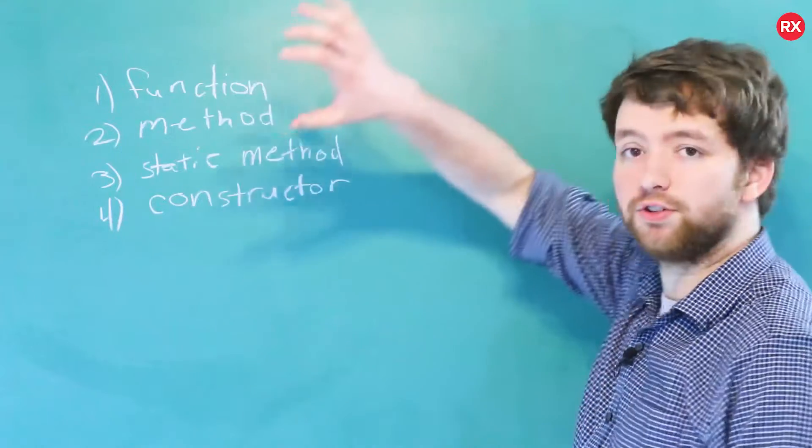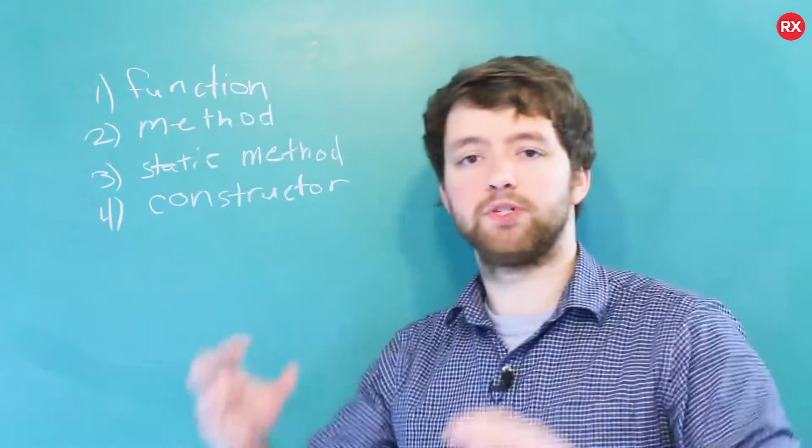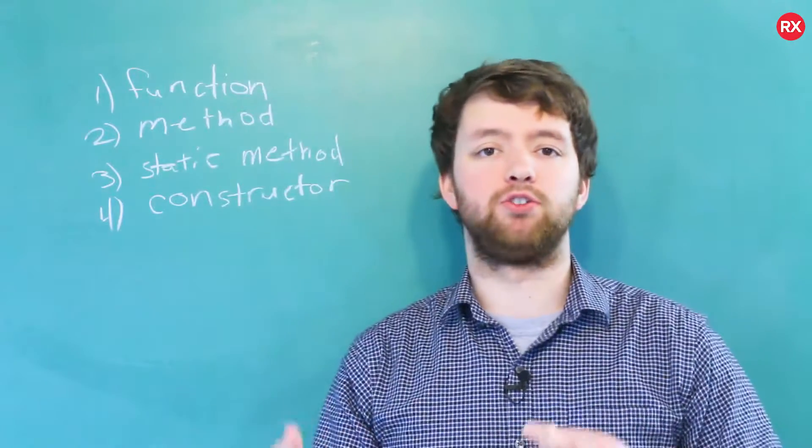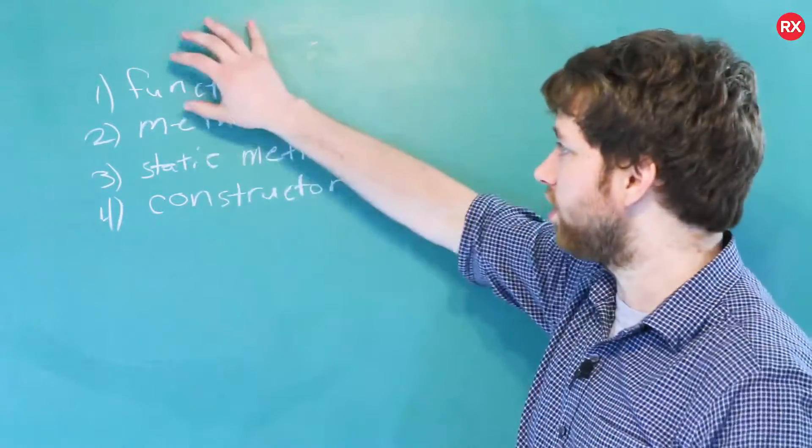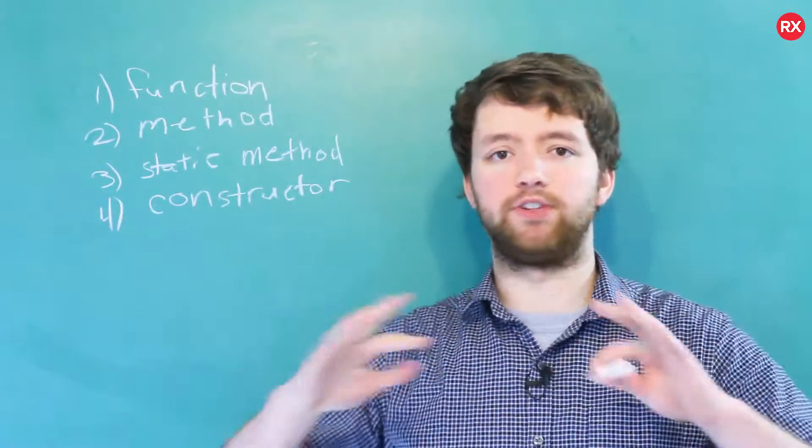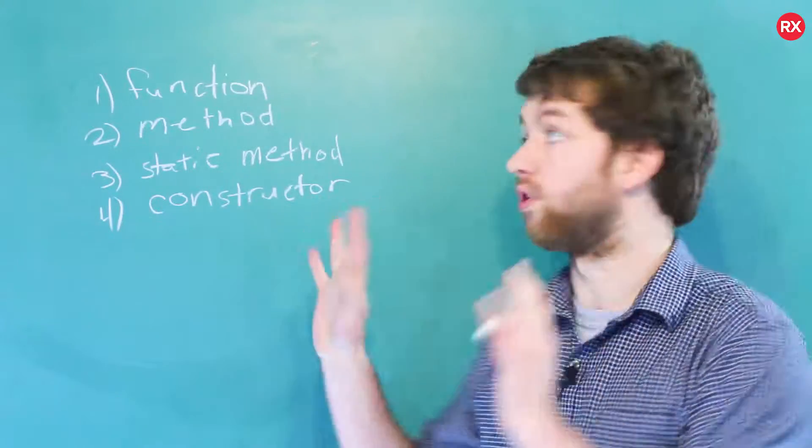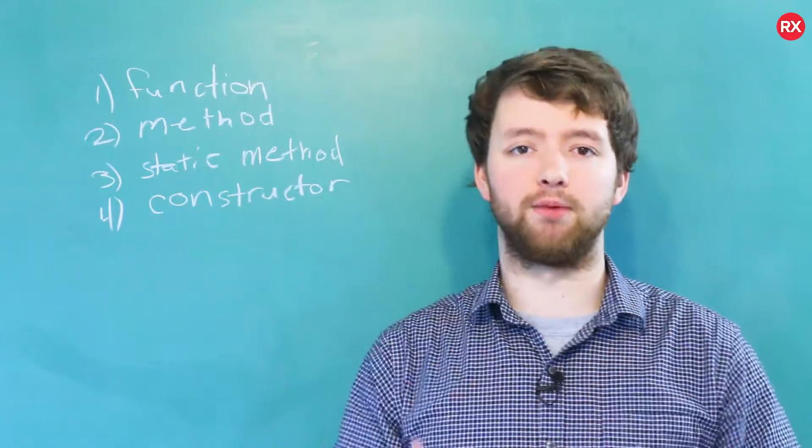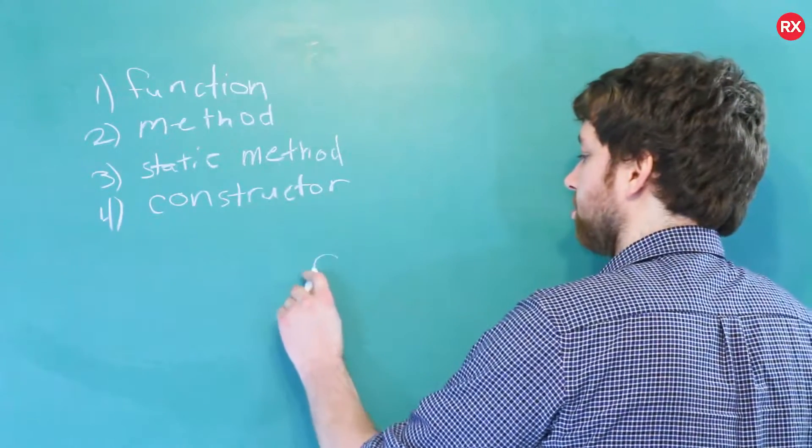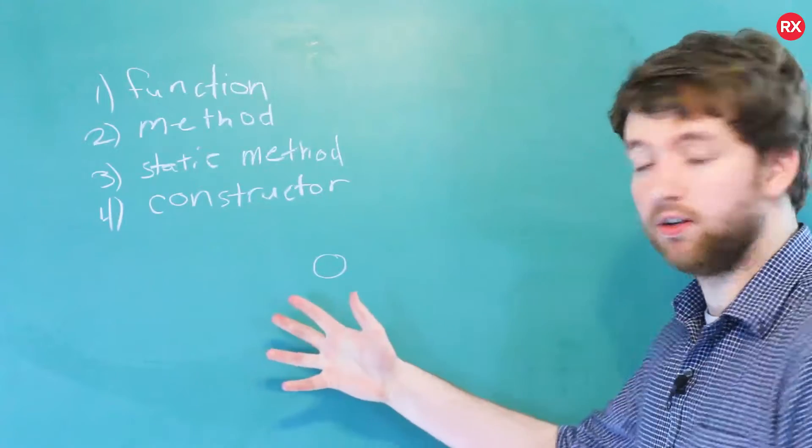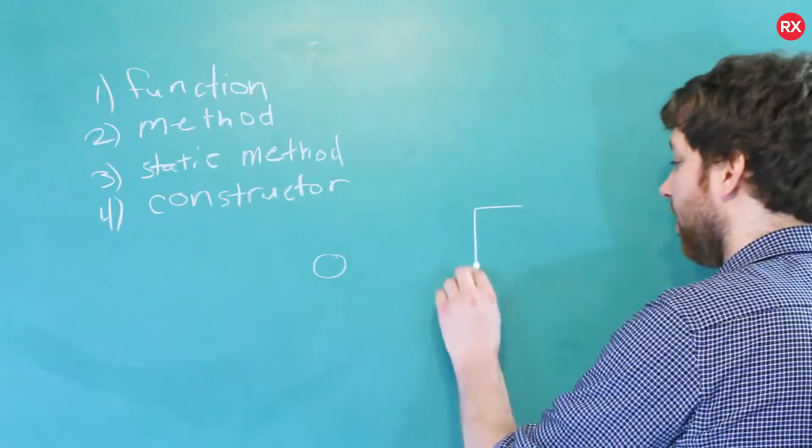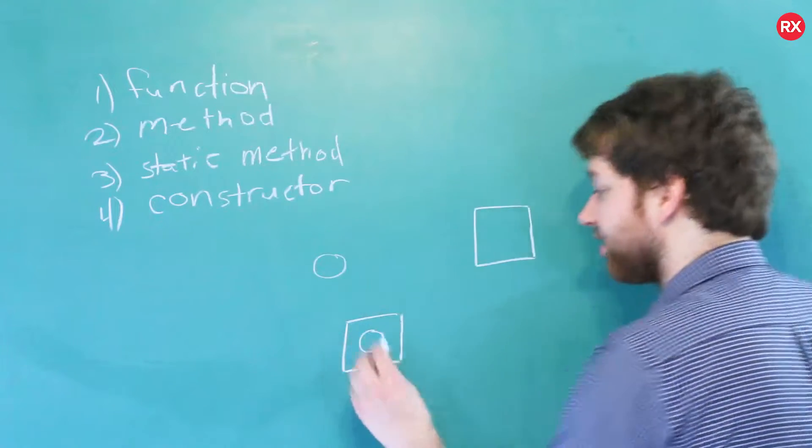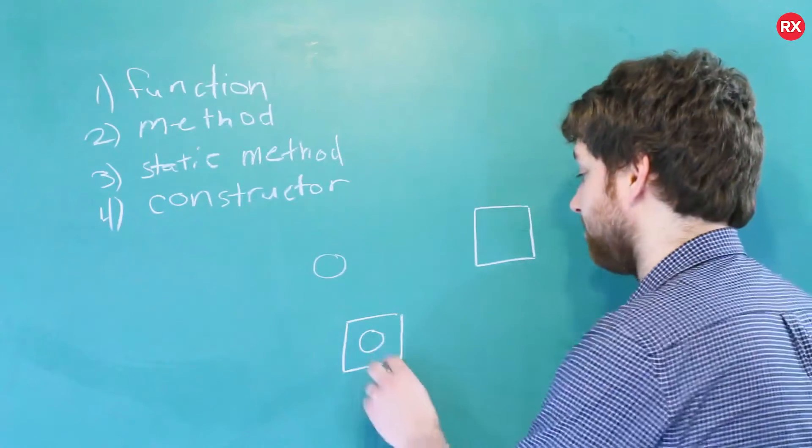Now, let's first talk about one and two. The only difference between one and two is that a method is attached to an object. So a function is freestanding. It's by itself. It's its own entity. It's strong. It's independent. Whereas a method is dependent upon an object. So let's say this circle is a function. A square is an object. When you put a circle inside of the square, it's known as a method.